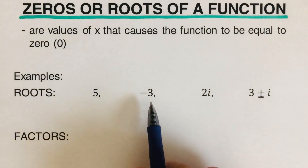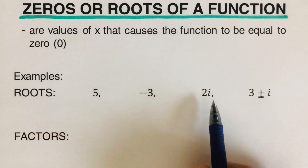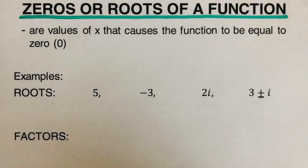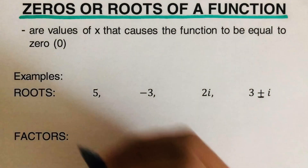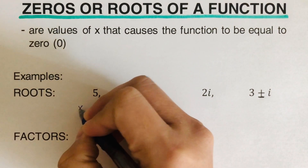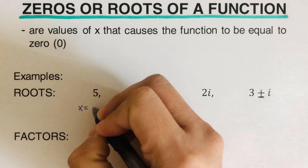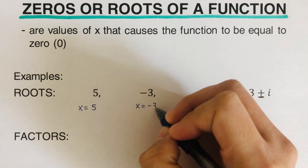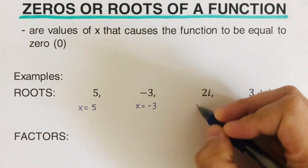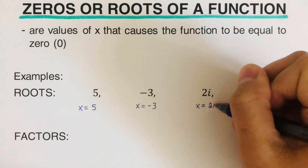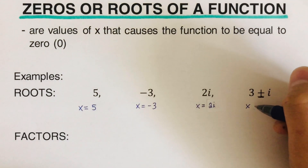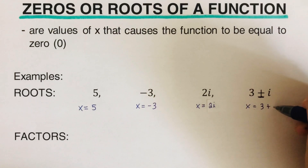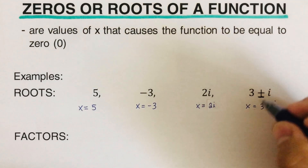In some problems the roots are written as: five, negative three, two i, three plus minus i. In other problems they write it differently — x is equal to five, x is equal to negative three, x is equal to two i, and x is equal to three plus i.